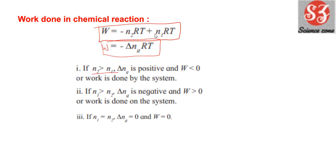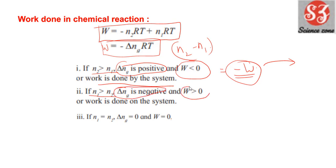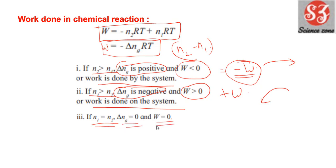यदि n2 > n1 तो Δn_g positive होगा, तो w < 0 — work is done by the system। यदि n1 > n2 तो Δn_g negative होगा, तो work done > 0 — positive work done, meaning surrounding system पर work कर रहा है। जब n1 = n2 (Δn_g = 0) तब कोई भी work done नहीं होगा।